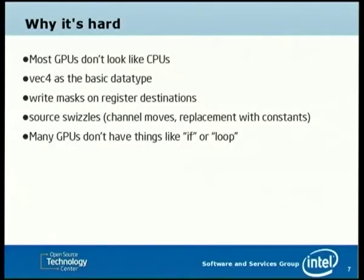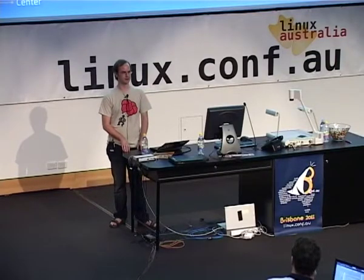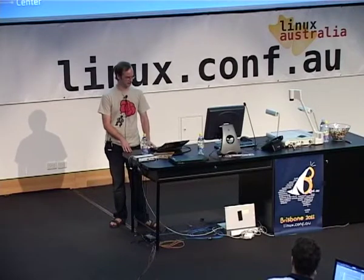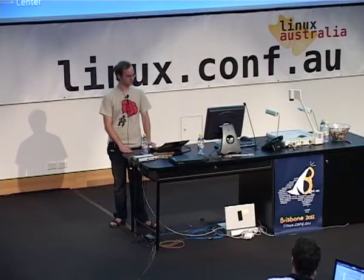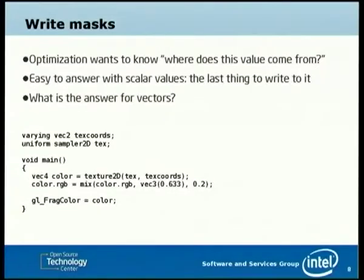There are some downsides though. GPUs don't really look like CPUs. We always work on vectors. There are floats in the language, but generally on most GPUs those floats are in a Vec4 register. We have write masks on these registers, so you can update just one component of your register, which makes a lot of optimization hard. Also, GPUs don't have general flow control. Write masks are one of the big things that make GPU optimization different from CPU compiler work.